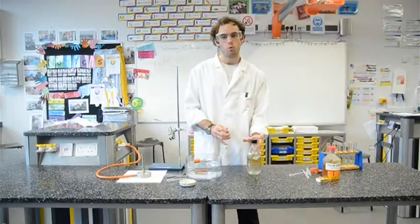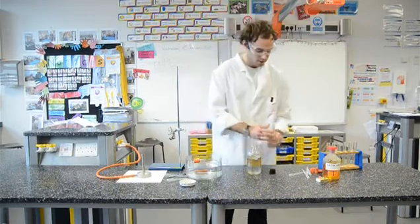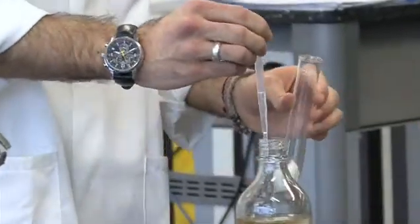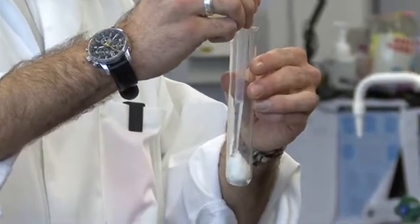To the boiling tube we're going to add between one and two centimeters cubed of our hydrocarbon source, paraffin oil. Make sure when you're adding this you're putting it straight to the wool; you don't want any excess paraffin along the sides of your test tube.